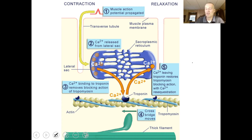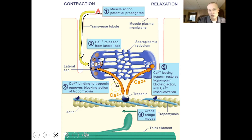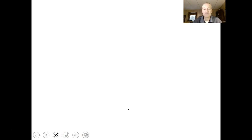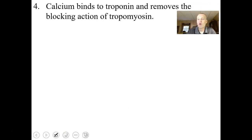The action potential causes calcium to be released from the sarcoplasmic reticulum. That calcium joins the regulatory protein troponin, which is connected to tropomyosin. When troponin joins with calcium, it rolls tropomyosin off of the binding sites on actin. All of those binding sites are currently closed off so myosin can't grab hold, but once tropomyosin rolls off, myosin can join with actin and the muscle can begin to contract. Calcium binds to troponin and removes the blocking action of tropomyosin.